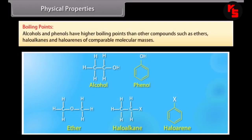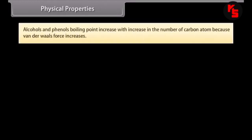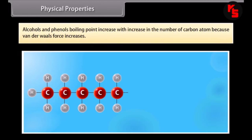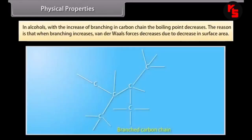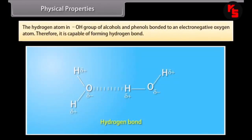Physical properties — boiling points: alcohols and phenols have higher boiling points than other compounds such as ethers, haloalkanes and haloarenes of comparable molecular masses. Boiling points increase with increase in the number of carbon atoms because van der Waals forces increase. In alcohols, with increase of branching in the carbon chain, the boiling point decreases because branching decreases surface area and thus van der Waals forces. The hydrogen atom in the OH group is bonded to an electronegative oxygen atom and is therefore capable of forming hydrogen bonds.